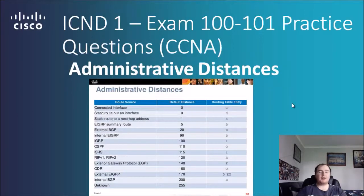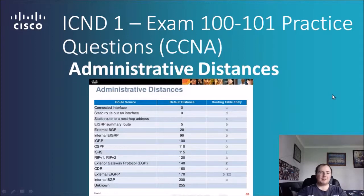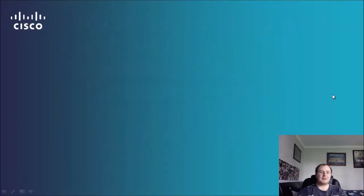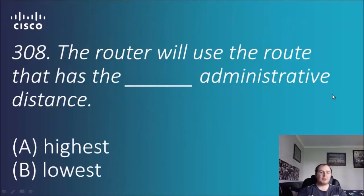Howdy folks, today I'm going to do another lot of questions — administrative distances will be the flavor of today. These might reveal some of the answers so you can look at them or not, up to you. Administrative distance is basically a reliability filter for where it routes networks.